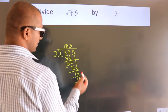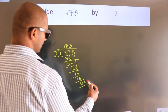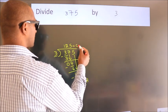After this, no more numbers to bring it down. So, we stop here. This is our remainder. This is our quotient.